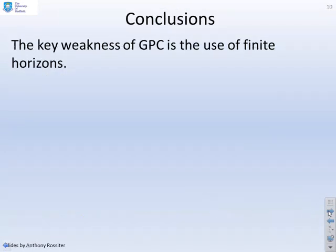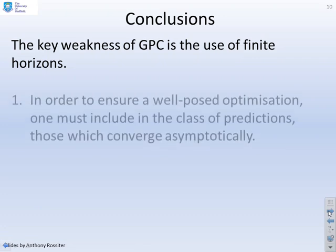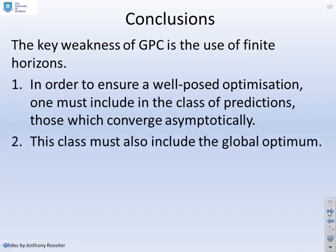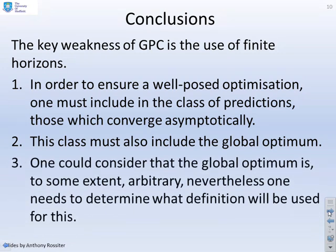In summary: the key weakness of GPC is the use of finite horizons. To ensure a well-posed optimisation, the class of predictions must include those which converge asymptotically rather than in finite time, and this class must also include the global optimum. We define the global optimum — although it could be considered somewhat arbitrary — using a fixed performance index with infinite horizons.